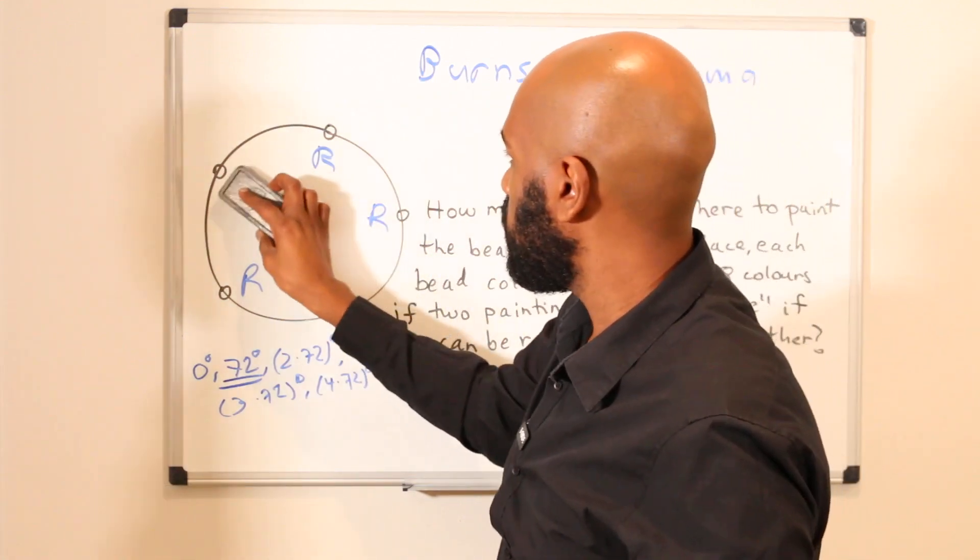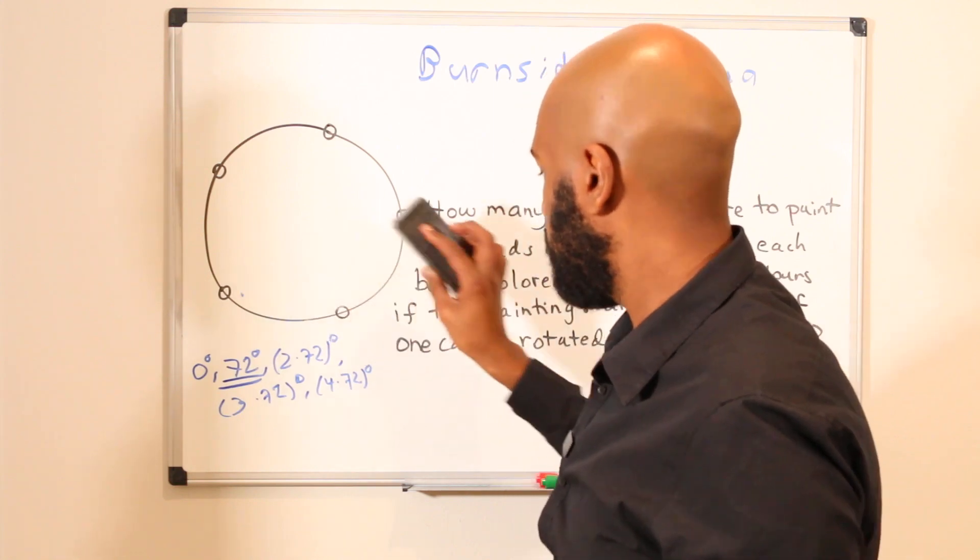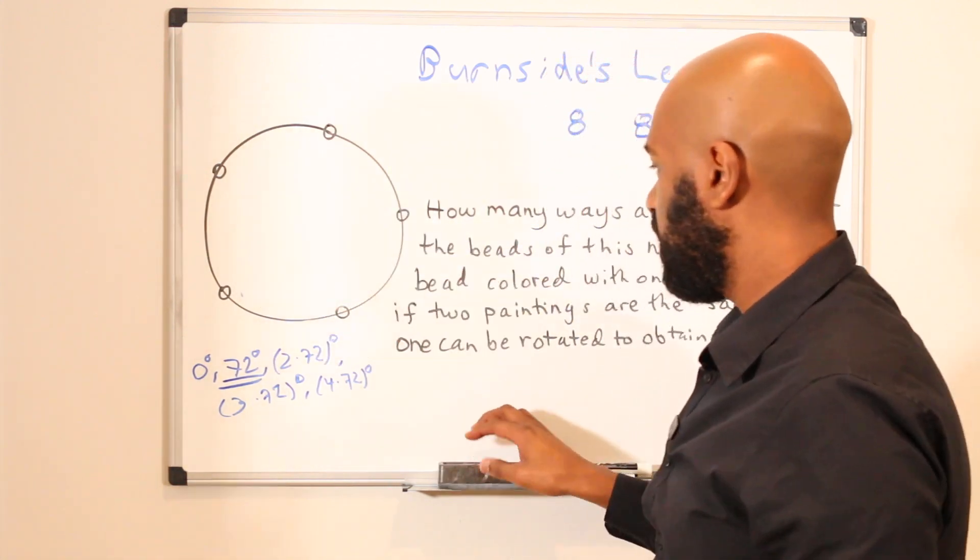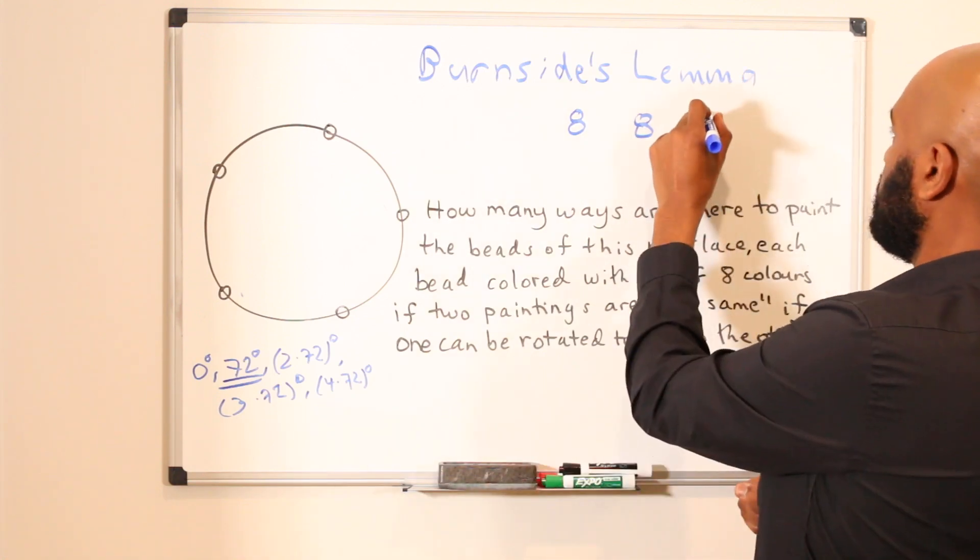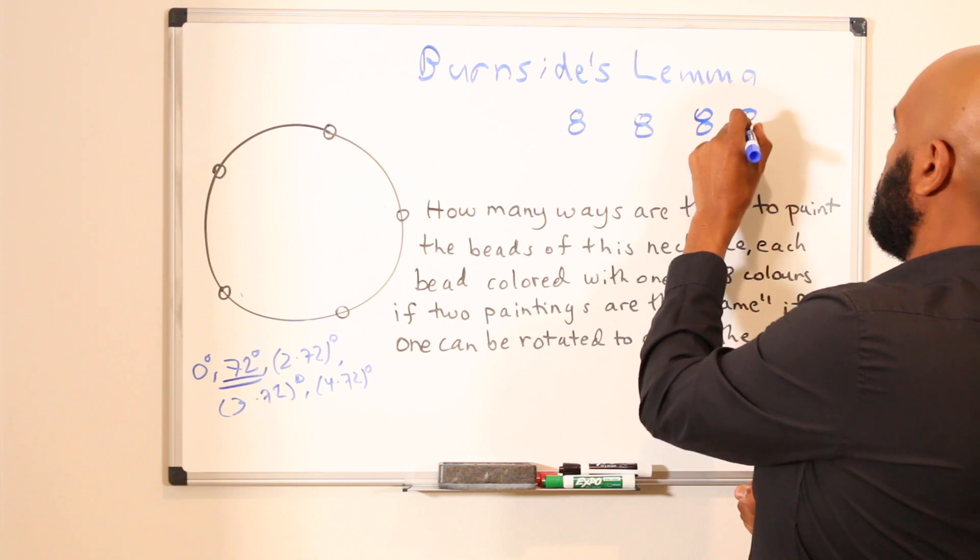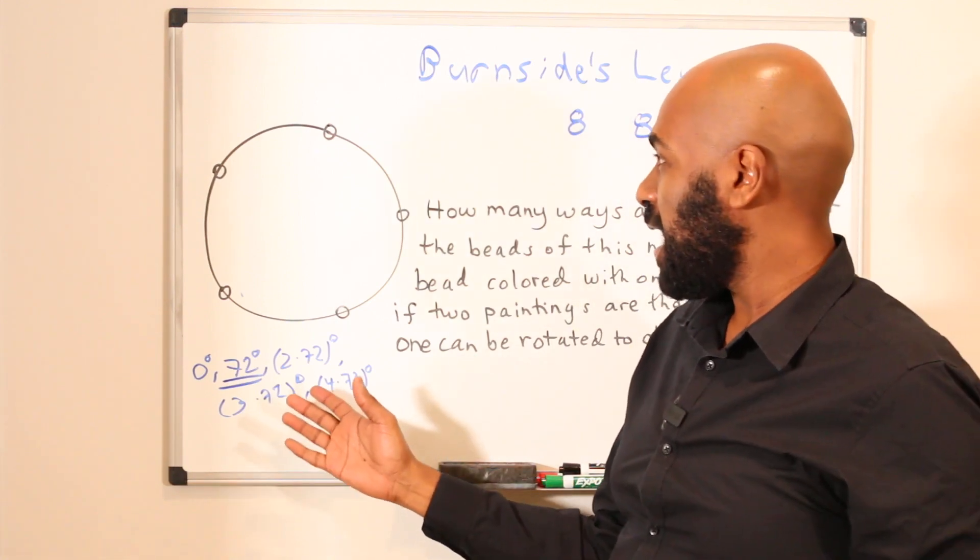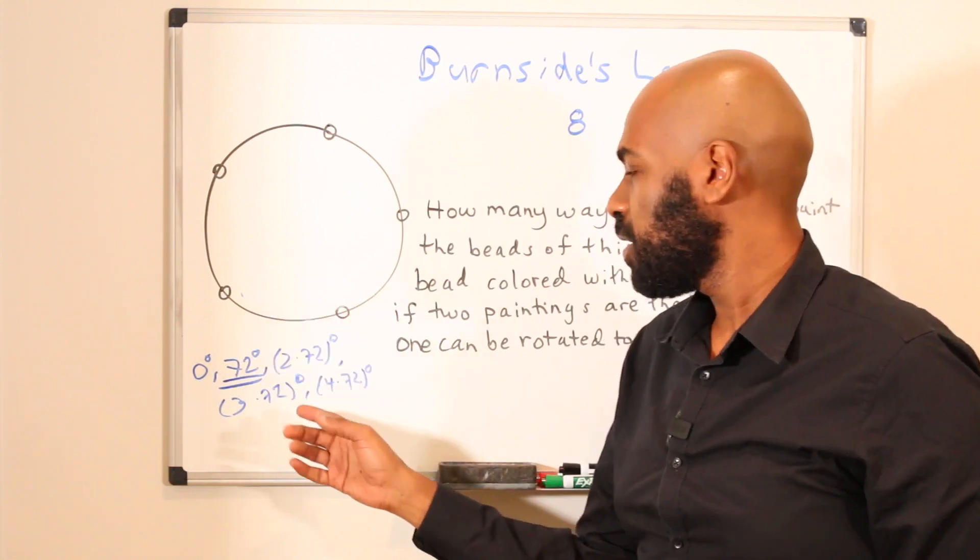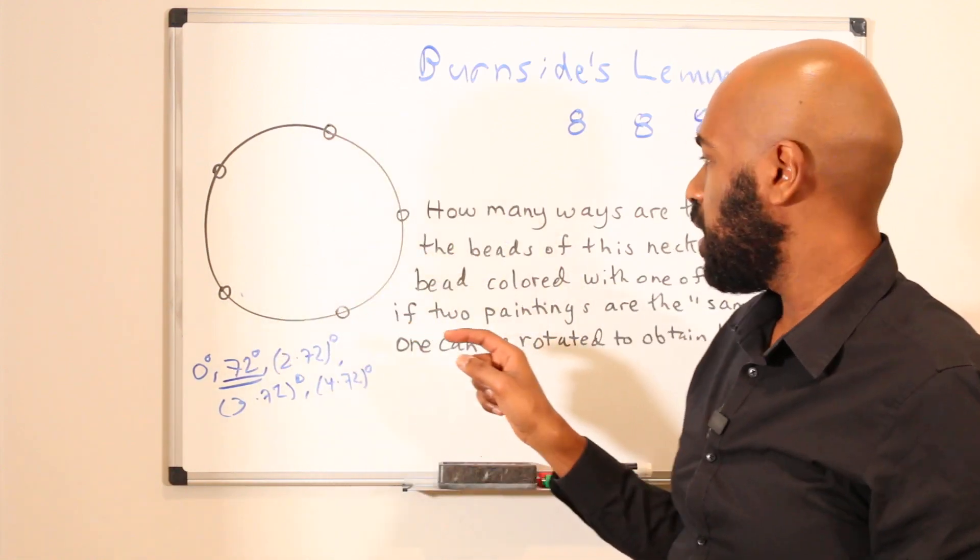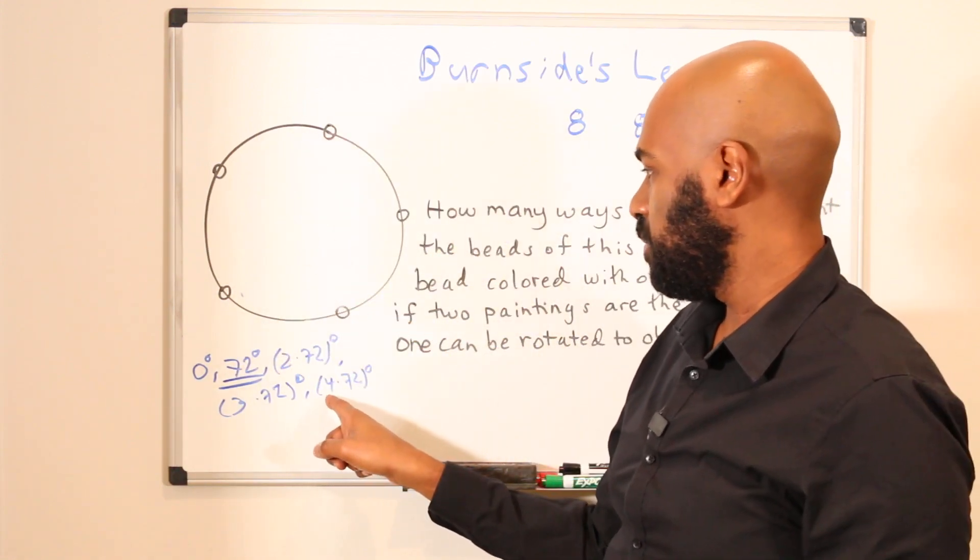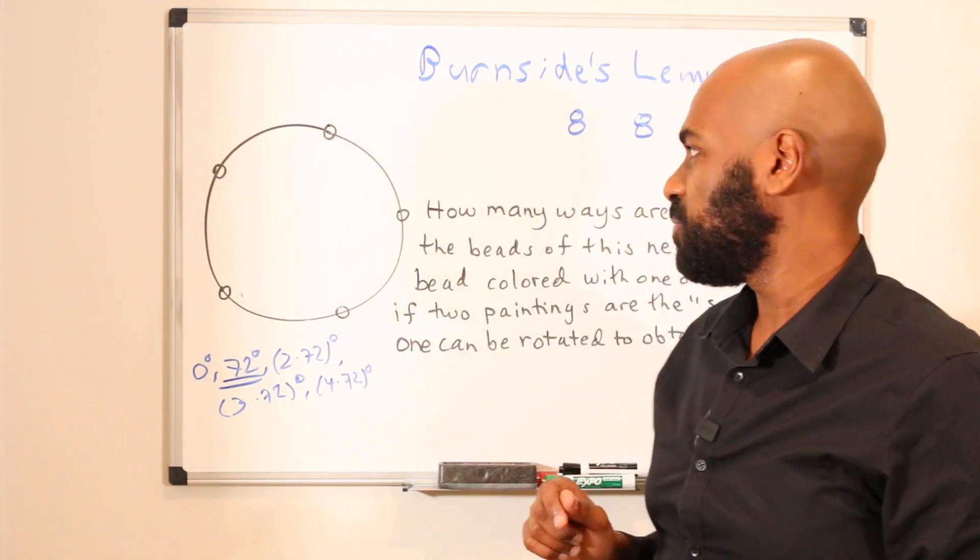If you try this with the other rotations here, you'll get the same phenomenon: that the number of rotations that are fixed under a 3 times 72 degree rotation and a 4 times 72 degree rotation are 8 and 8 as well. And the reason why has to do with the fact that we have five beads. There's a prime number, and no matter what, when we rotate it around any constant multiple times this angle, we're going to be forced to have all the colors be the same.